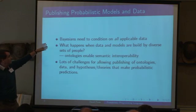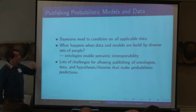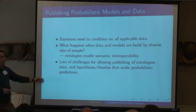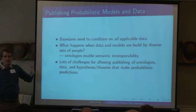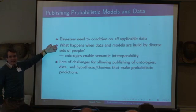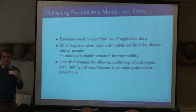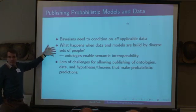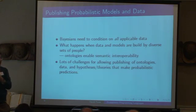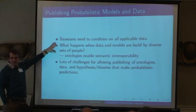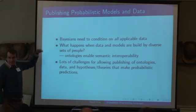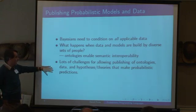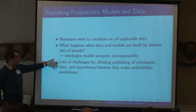Here are some challenges for the future of probabilistic programming languages. If you're Bayesian, you should condition on all applicable data — condition on everything in the world that's relevant. But what happens when data and models are built by diverse sets of people? In some applications, data is produced by people who know nothing about our models and vice versa. We want to interoperate with them so we can condition on their data. People are developing ontologies to enable semantic interoperability so that you can get data from anywhere in the world and condition on it to make predictions. This is one of the real challenges: how can we really be Bayesian? Hardly anyone really conditions on all the knowledge in the world applicable to their theory.